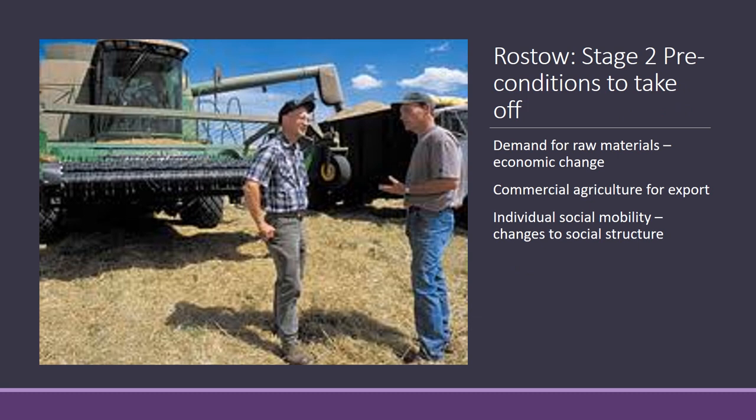Stage two — the preconditions for takeoff — is where the demand for raw materials increases. For example, the demand for coffee in places like Kenya will lead to economic change. More people become involved, generating profit from agricultural products, which allows them to invest in further machinery, produce more, and export. If you walk down most high streets now you'll see coffee from around the world — a perfect example of stage two. These nations start to produce more than they need, sell it for export, and we in the West consume it. We then start to see some individual social mobility, a movement away from collectivist ideals toward individualism and the introduction of entrepreneurship.